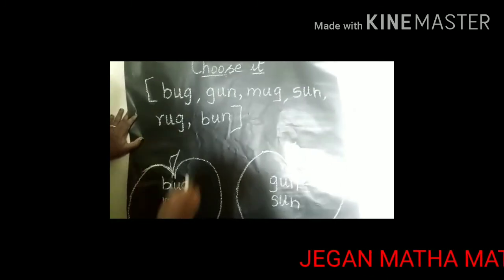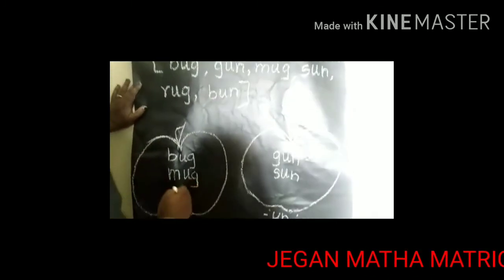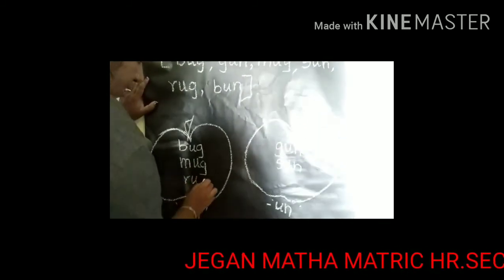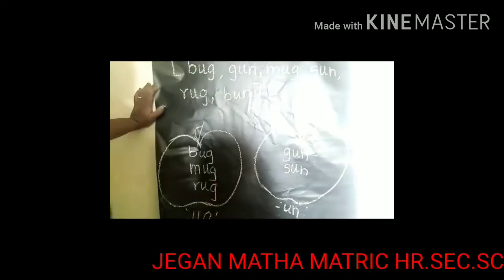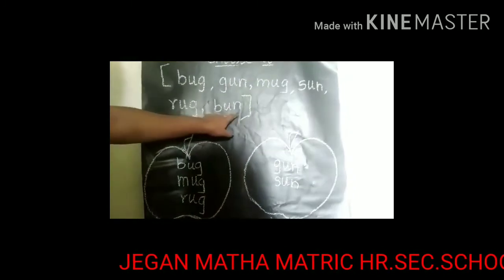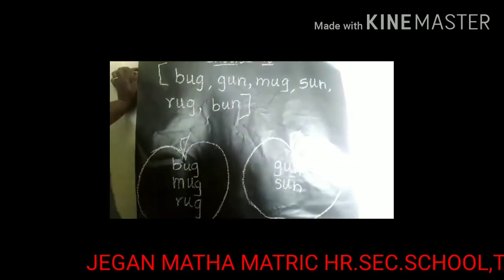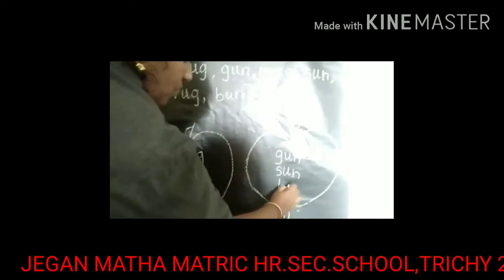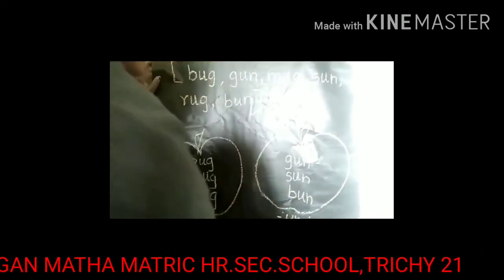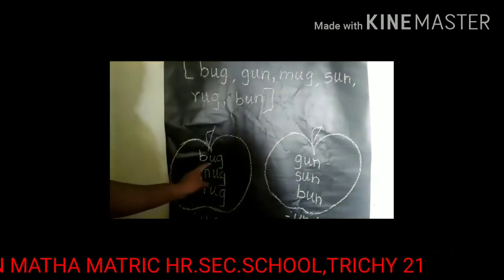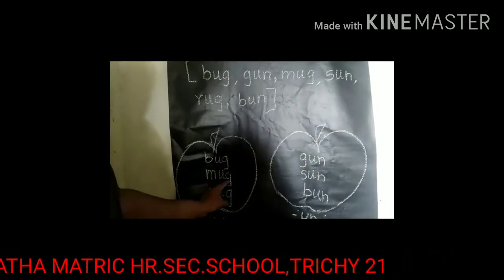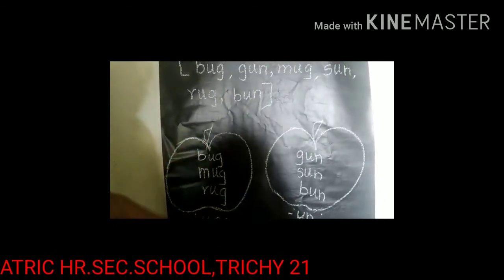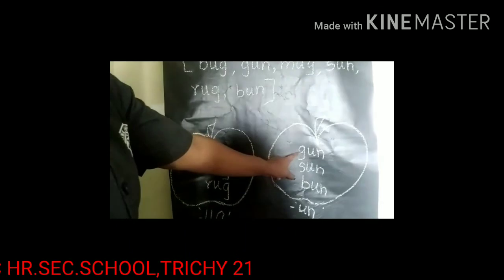Now see: R, U, G — Rug. Where should we write? We should write it here in the Ug column: R, U, G — Rug. Now see the last word: B, U, N — Bun. Where should we write? In the second column: B, U, N — Bun. Now review: Bug, Mug, Rug — these all contain Ug family words.